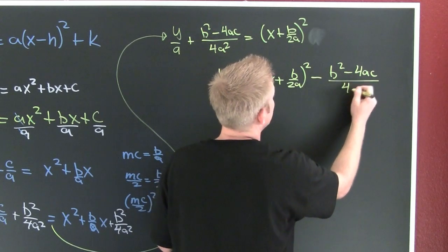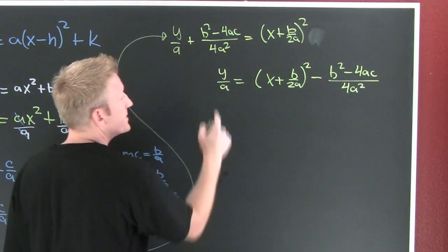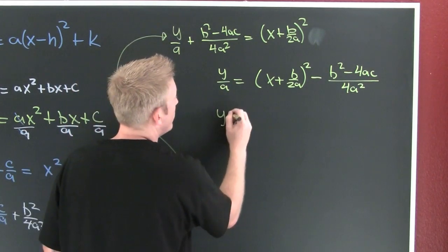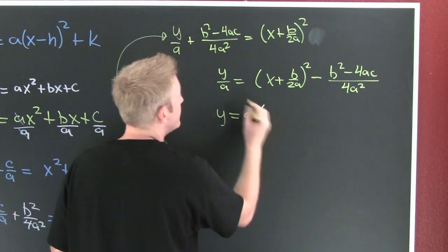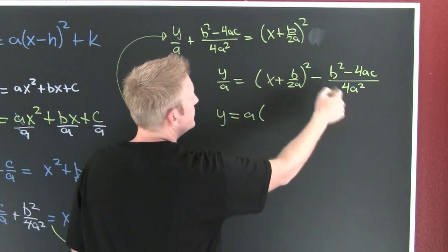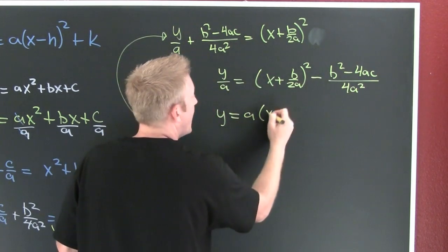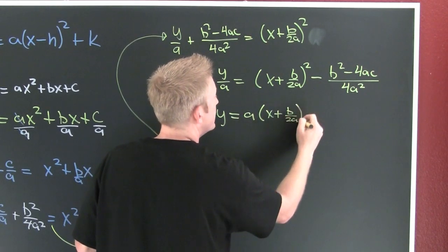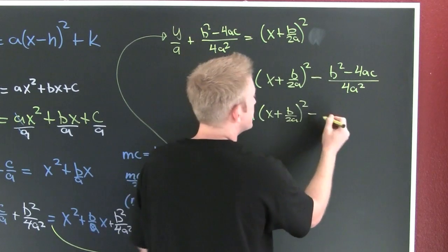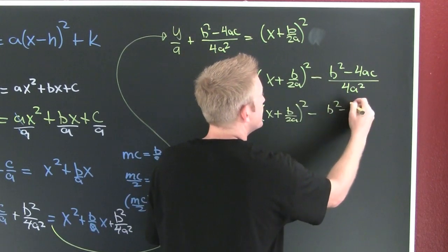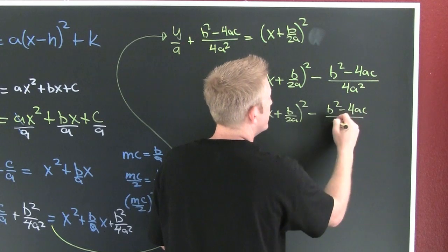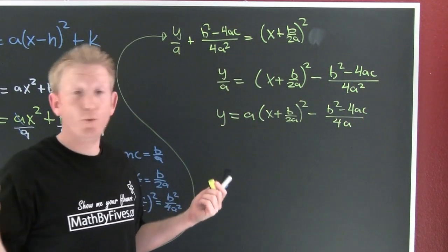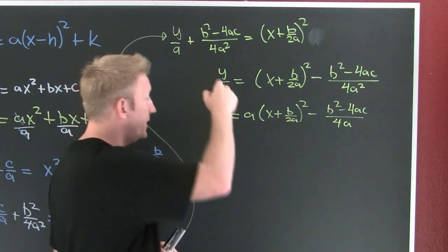...x minus b over 2a, plus b over 2a squared, subtract off that b squared minus 4ac divided by 4a squared. Still solving for y, I multiply both sides by a, and then y is going to be a times, because then I go and it's going to reduce with that a...